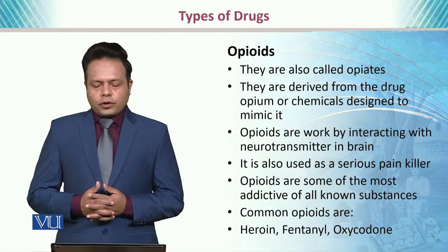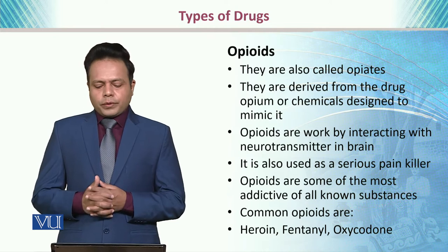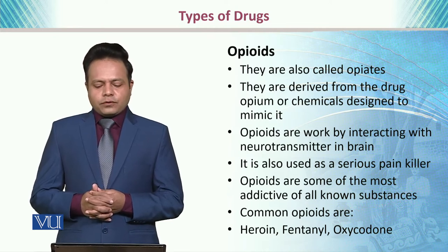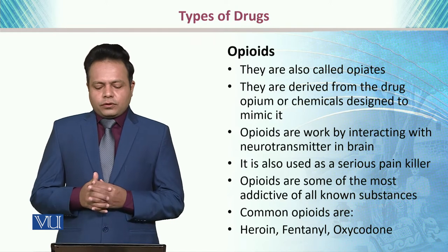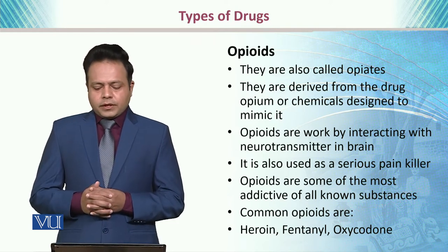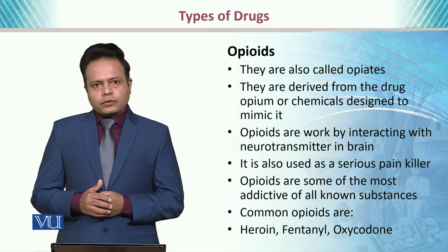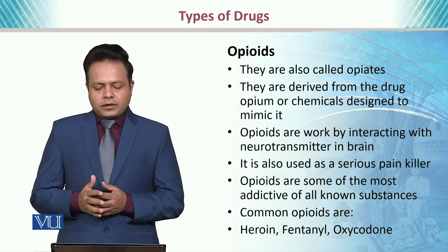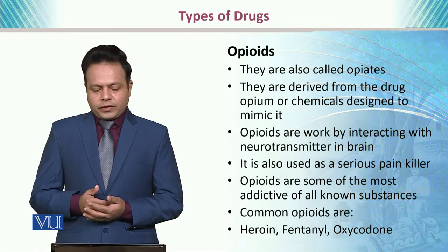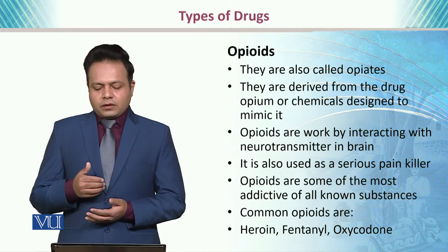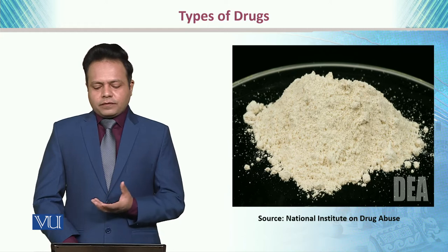Then we have opioids, also called opiates. They are derived from the drug opium or chemicals designed to mimic it. Opioids work by interacting with the neurotransmitters in the brain, and are also used as serious painkillers. Opioids are some of the most addictive of all known substances. Common forms include heroin, fentanyl, and oxycodone. Here is one of the opioids.